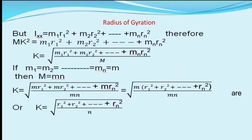Putting these values, we get K = √[(m·r1² + m·r2² + ... + m·rn²) / (m·n)]. Taking m common and cancelling, we get K = √[(r1² + r2² + ... + rn²) / n]. Therefore, radius of gyration can also be defined as the root mean square distance of the particles of the body from the axis of rotation.